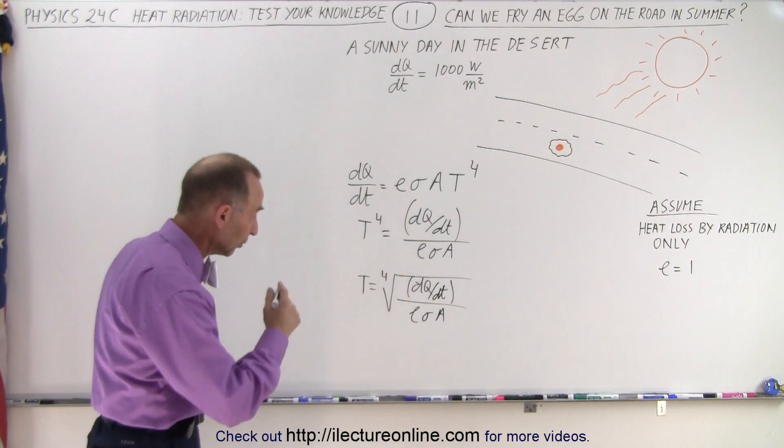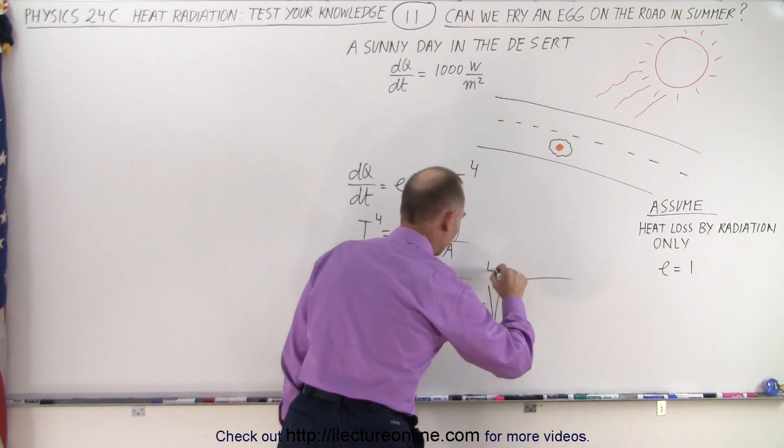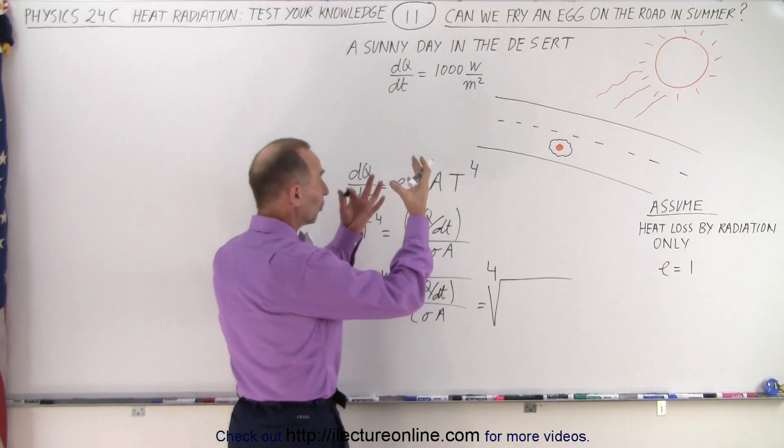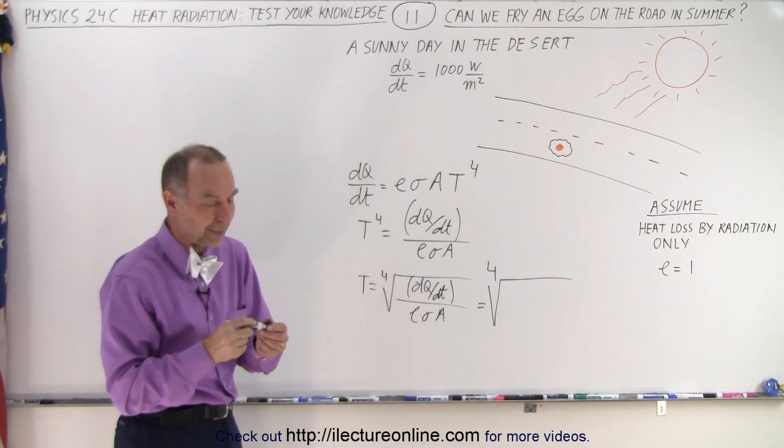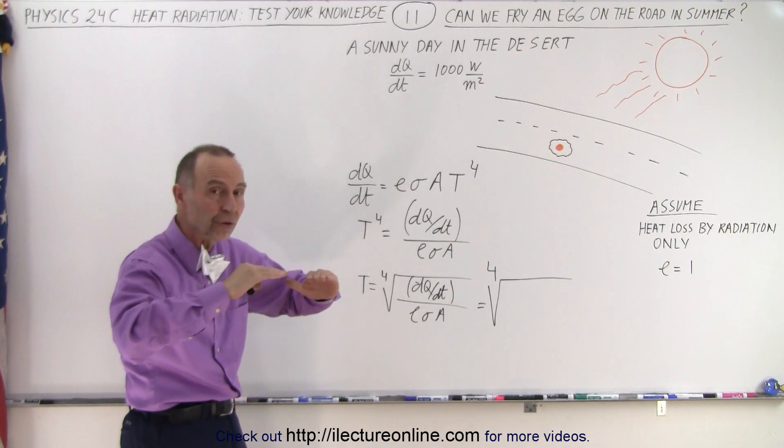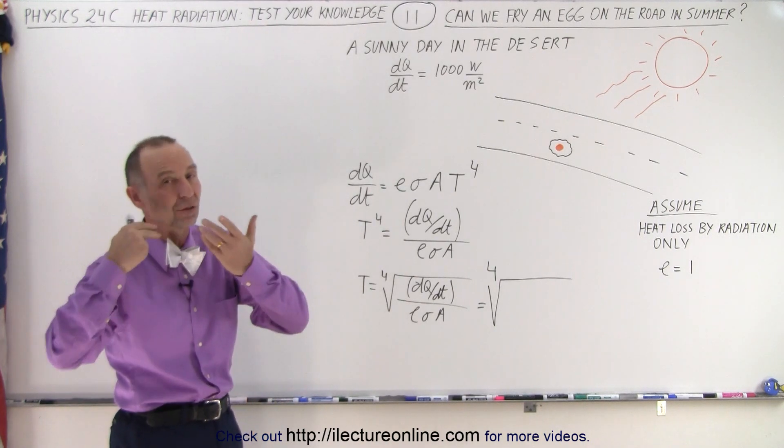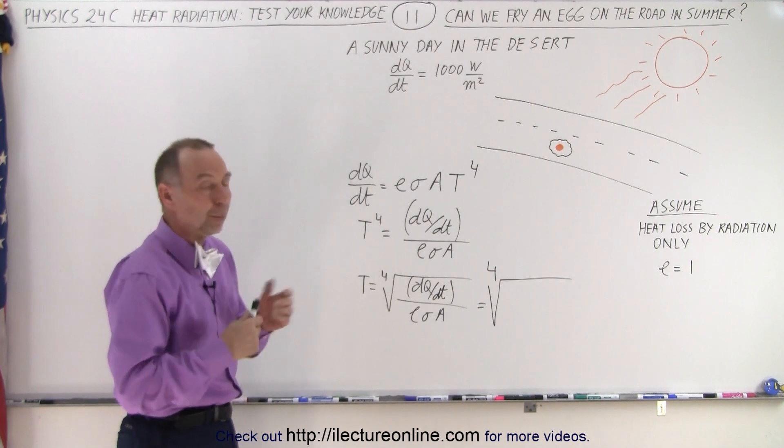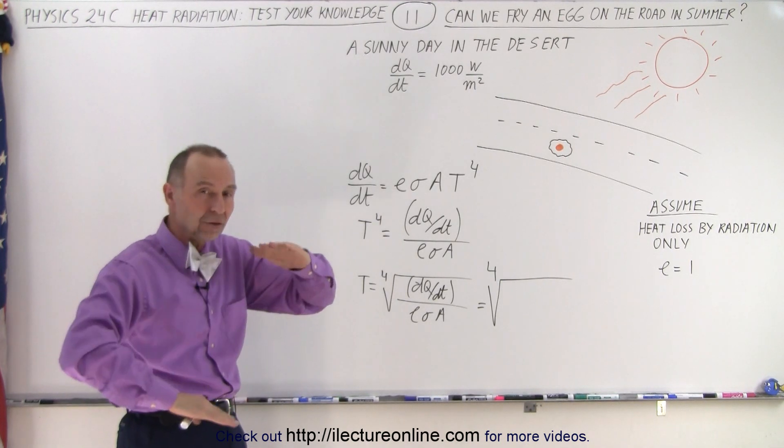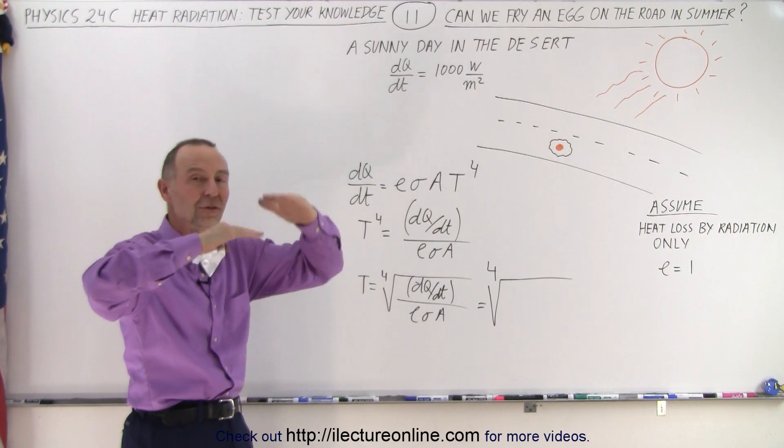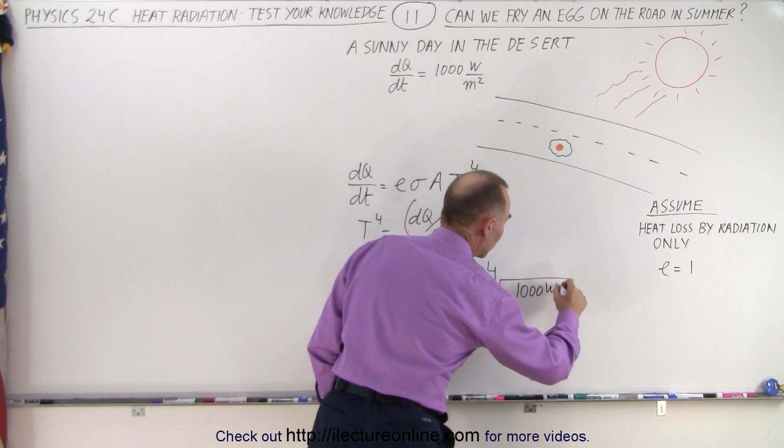So what are the units and numbers we're going to plug into this equation? If the road receives 1,000 watts per square meter, it's going to re-radiate that 1,000 watts per square meter. What we're looking for is that equilibrium temperature at which the incoming radiation, 1,000 watts per square meter, equals the outgoing radiation of 1,000 watts per square meter. In the morning when the road is cool, it will receive more heat from the sun than it radiates back out. The temperature of the road will then rise until the two are equal to each other.